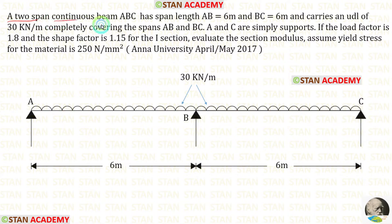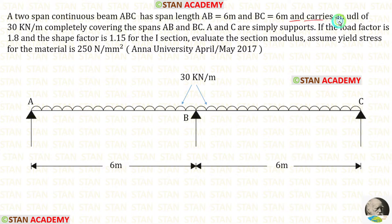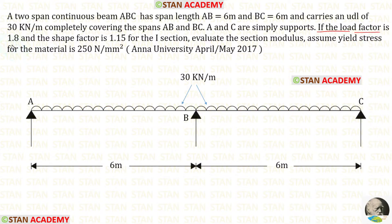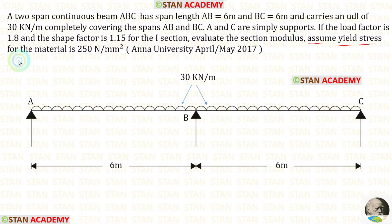A two-span continuous beam ABC has span length AB of 6 meters and BC of 6 meters, and carries a UDL of 30 kN per meter completely covering spans AB and BC. The load factor is 1.8 and the shape factor is 1.15 for the I-section. Evaluate the section modulus, given that the yield stress for the material is 250 N/mm².